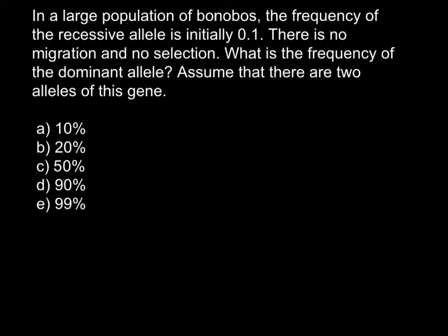Here is the question: In a large population of bonobos, the frequency of the recessive allele is initially 0.1. There is no migration and no selection. What is the frequency of the dominant allele? Assume that there are two alleles of this gene.